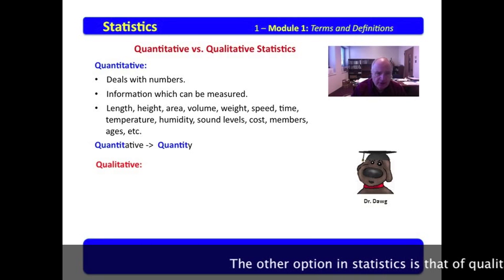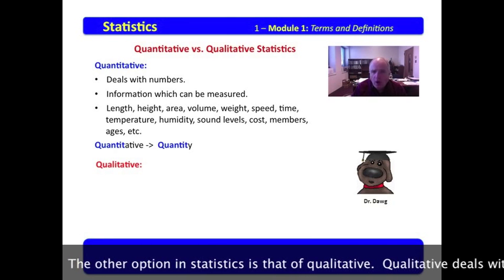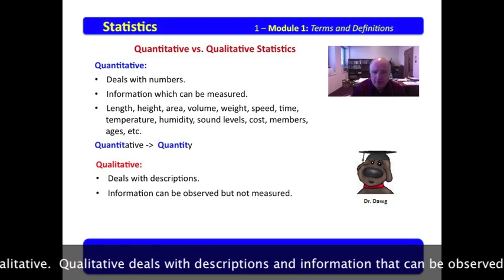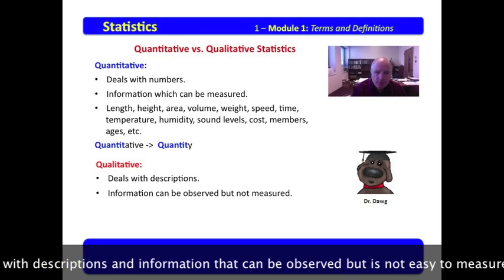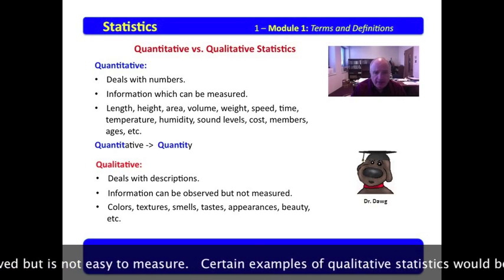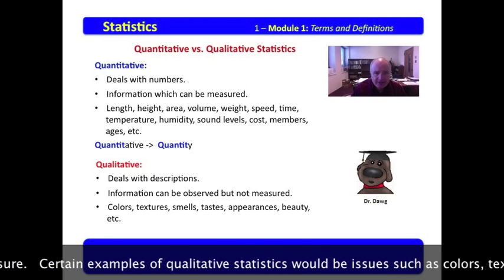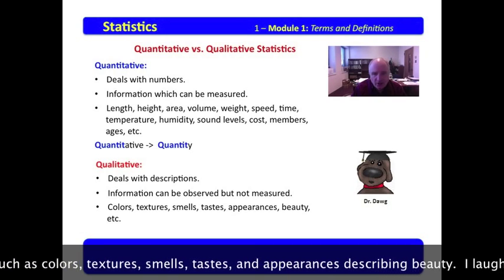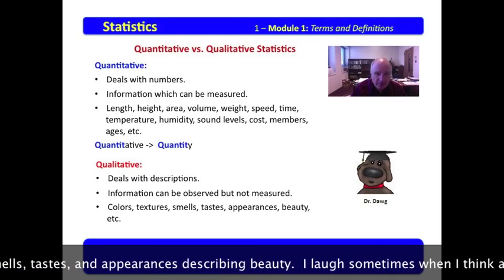The other option in statistics is that of qualitative. Qualitative deals with descriptions and information which can be observed but is not easy to measure. Certain examples of qualitative statistics would be issues such as colors, textures, smells, taste, appearances, describing beauty.